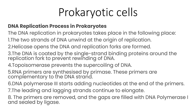That was all in eukaryotic cells, but let's briefly discuss prokaryotic cells. DNA replication also occurs in prokaryotic cells through the following methods: the two strands of DNA unwind at the origin of replication; helicase opens the DNA and replication forks are formed; the DNA is coated by single-strand binding proteins around the replication fork to prevent rewinding. A special enzyme called topoisomerase prevents the supercoiling of DNA. RNA primers are synthesized by primase, complementary to the DNA strand. DNA polymerase 3 starts adding nucleotides at the end of primers. The leading and lagging strands continue to elongate, the primers are removed, and the gaps are filled with DNA polymerase 1 and sealed by ligase.